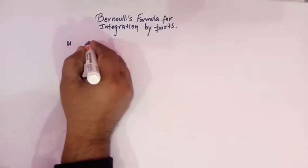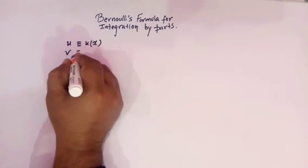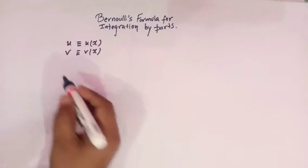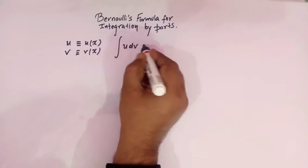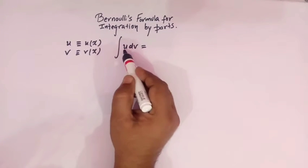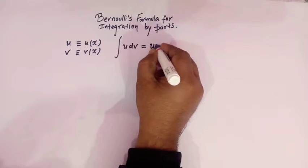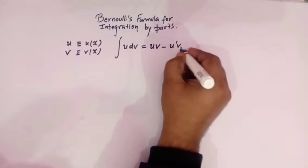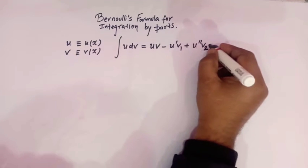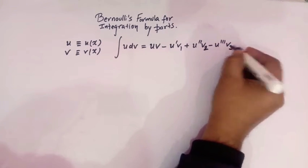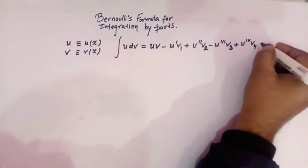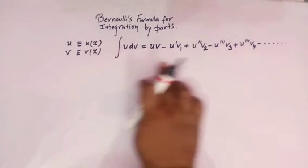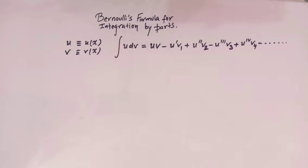Hello viewers. In today's class we are going to learn one important method of integration by parts using Bernoulli's formula. So let us start. Suppose u and v are two functions of x and suppose we have to integrate u dv, then according to Bernoulli's formula the integration of u dv is equal to u·v minus u'·v1 plus u''·v2 minus u'''·v3 plus u''''·v4 minus so on. So this is the formula for integration by parts which was given by Bernoulli.